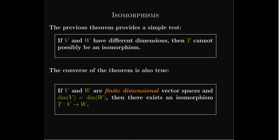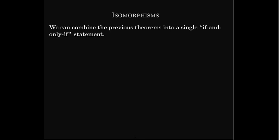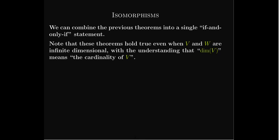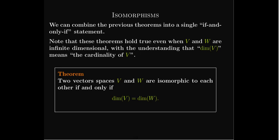The converse of our previous theorem is also true. If you have two finite-dimensional vector spaces with the same dimension, then you can find an isomorphism between them — that one thing, the dimension, is enough to make them isomorphic. We can combine these in an if-and-only-if statement. These theorems hold even for infinite-dimensional spaces, but we replace dimension with cardinality. So V and W are isomorphic if and only if they have equal dimension.